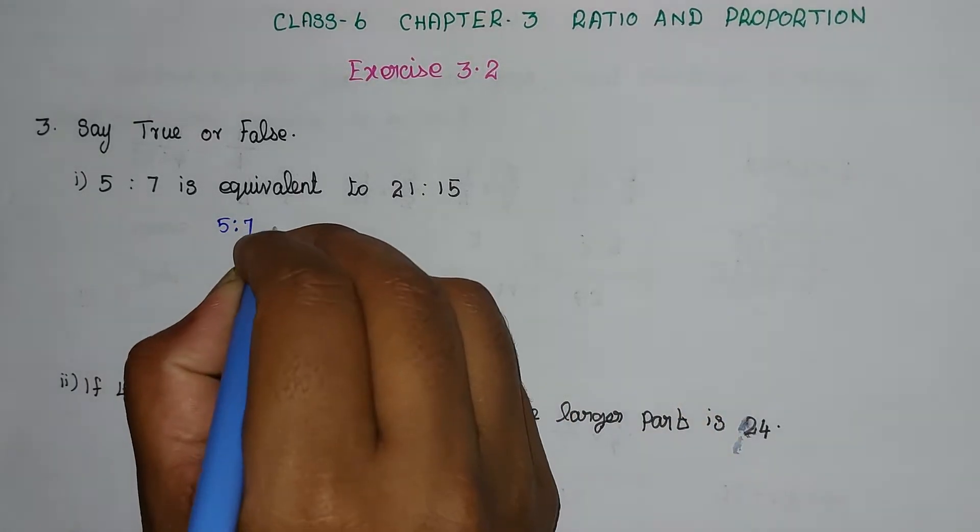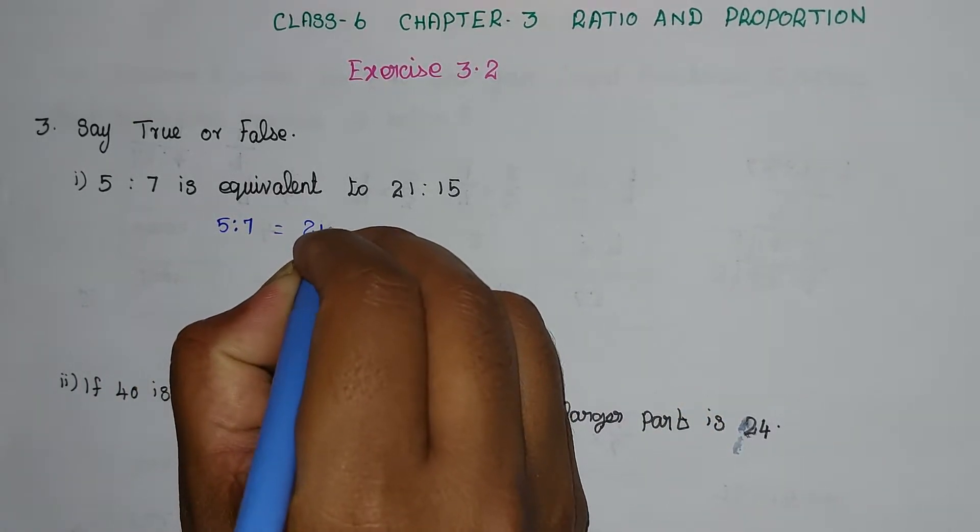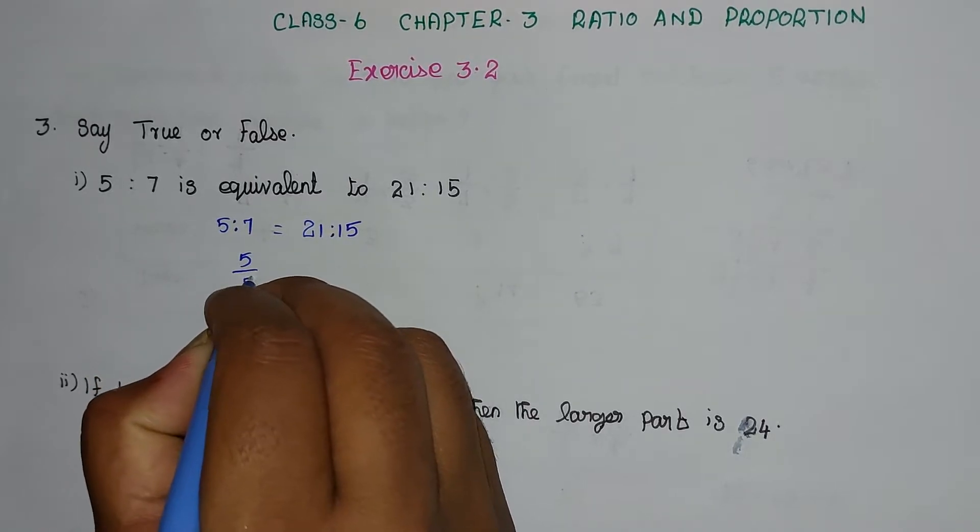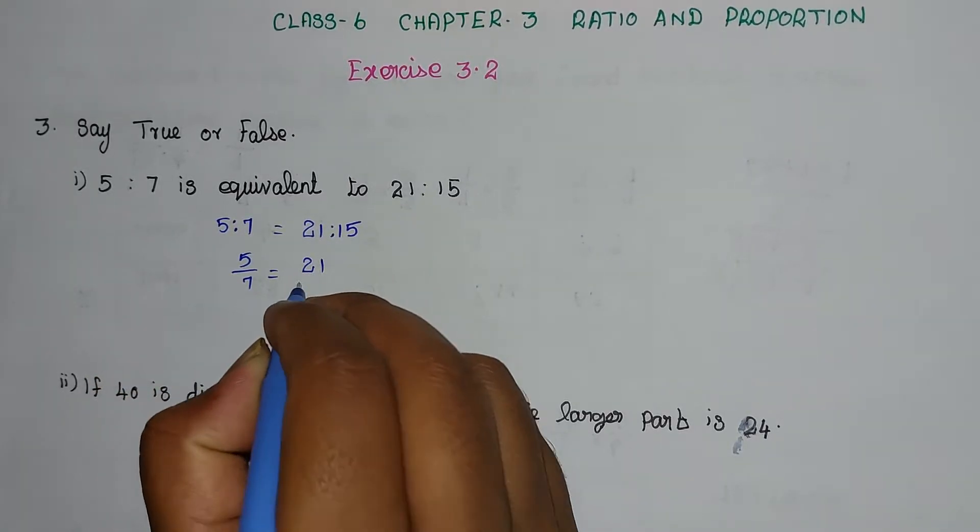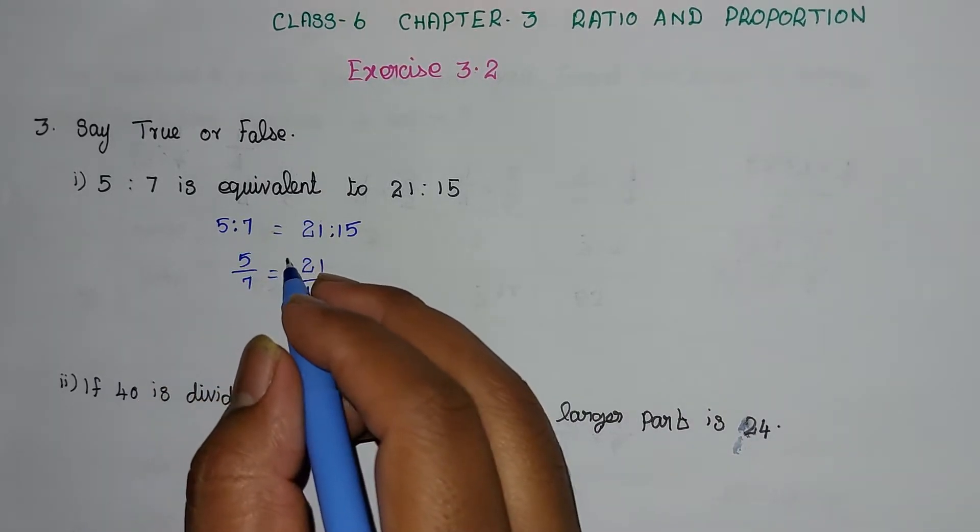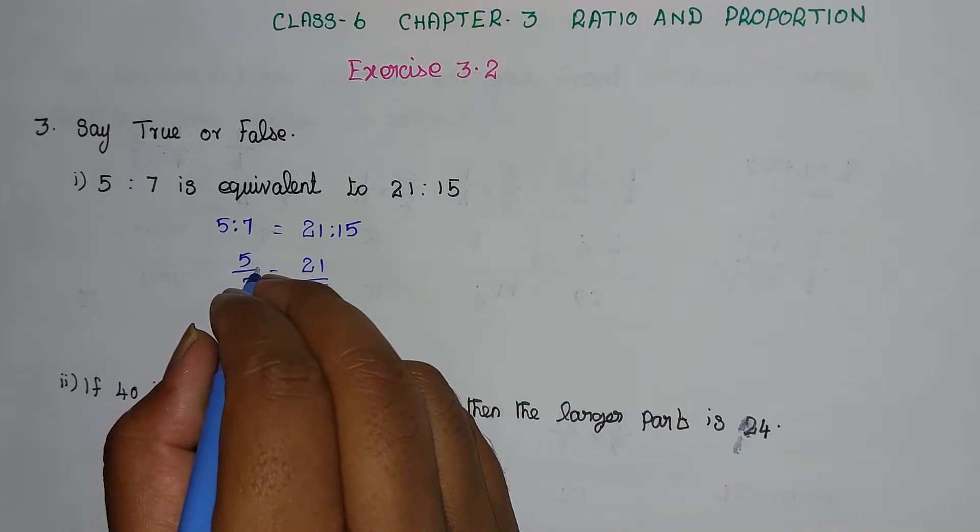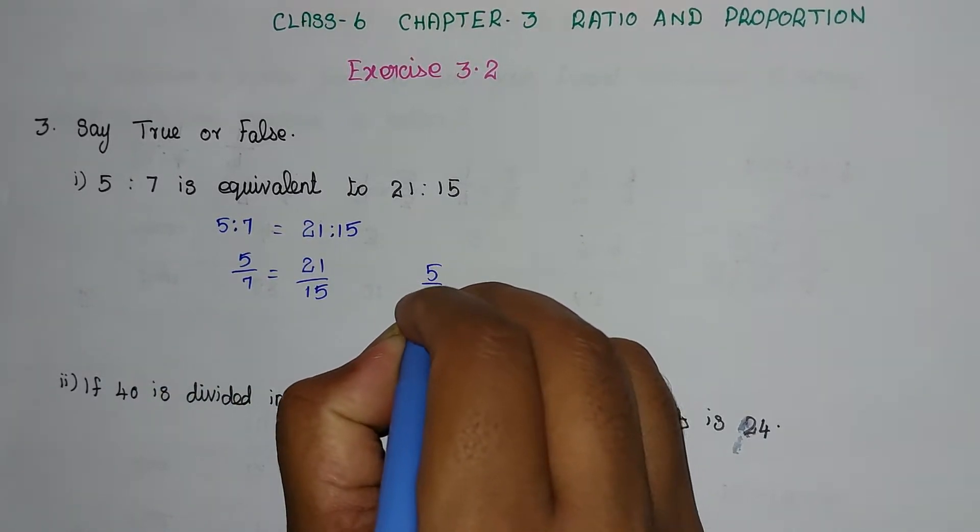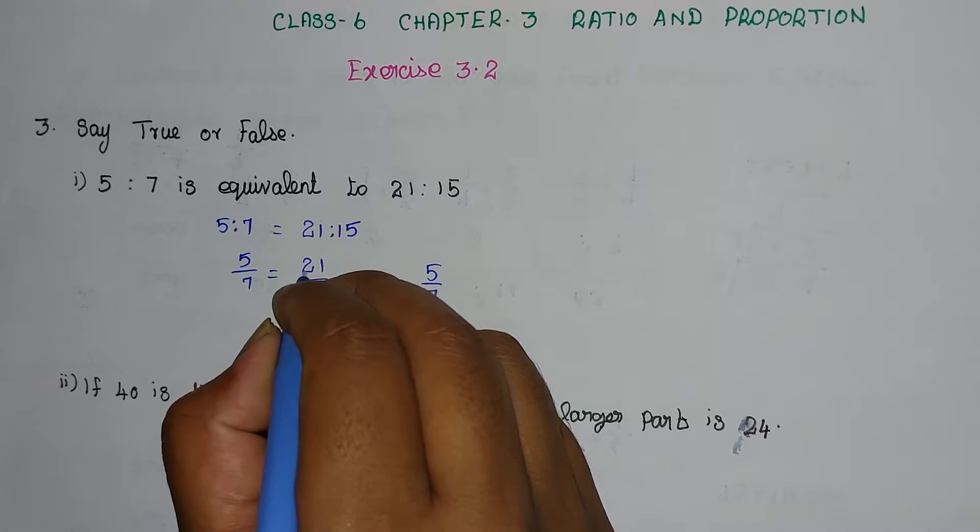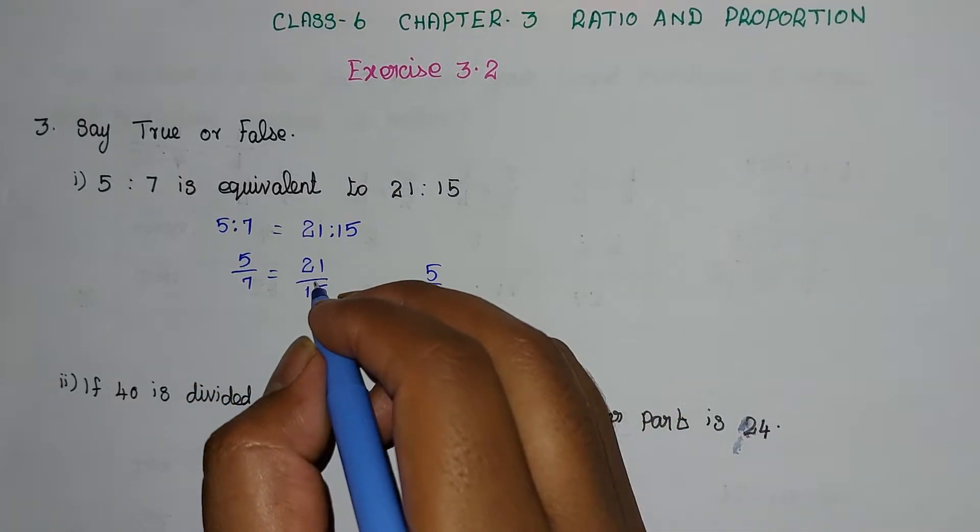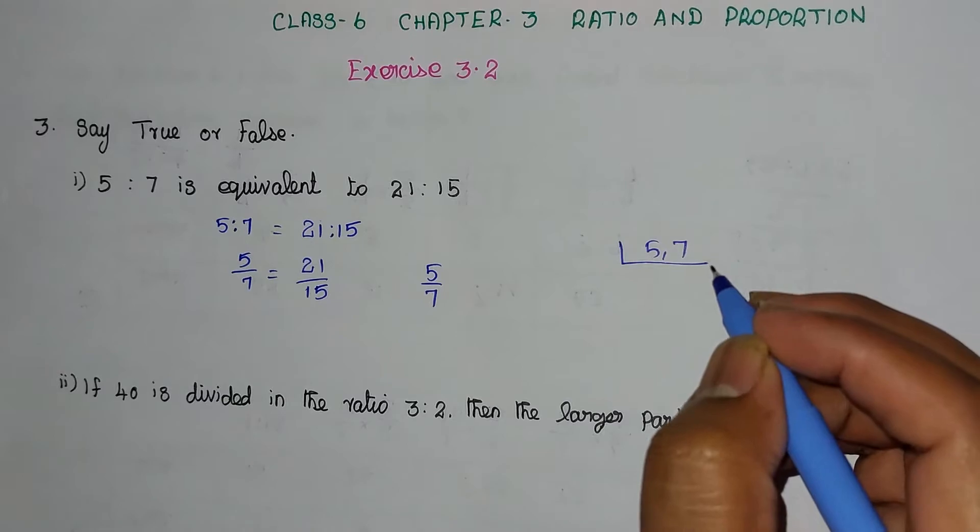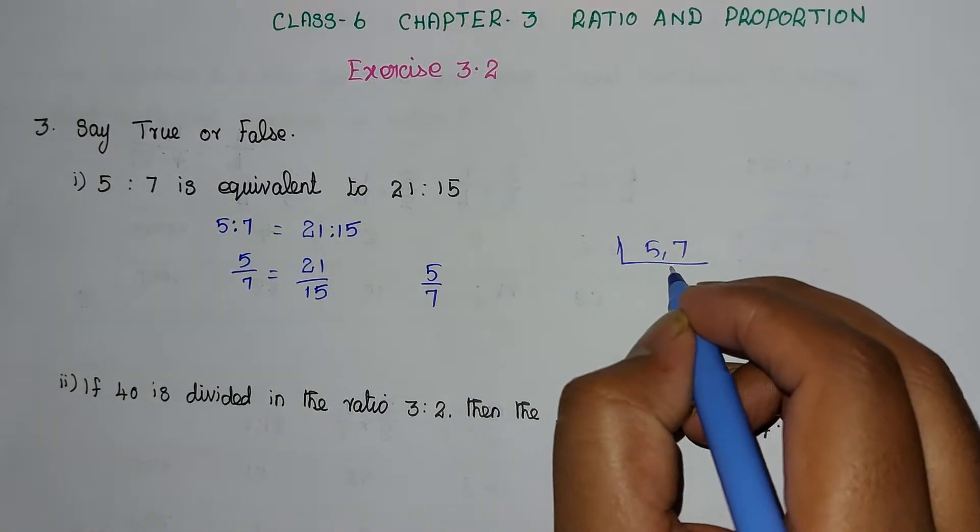5 is to 7 equal to 21 is to 15. We write this as 5/7 = 21/15. For equivalent ratios, the numerator and denominator must be multiplied by one common number. If you want to find the equivalent ratio, multiply both numerator and denominator by the same common number.